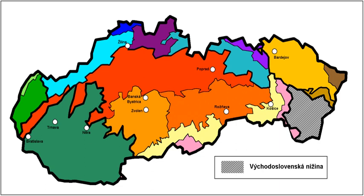The East Slovak Lowland is the name of the part of the Great Hungarian Plain situated in Slovakia. In terms of geomorphology, it forms one unit together with the Tissa Lowland in Hungary, the Transcarpathian Lowland in Ukraine, and the Plain Compia Sumsalui in Romania.